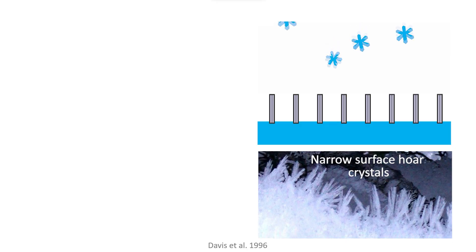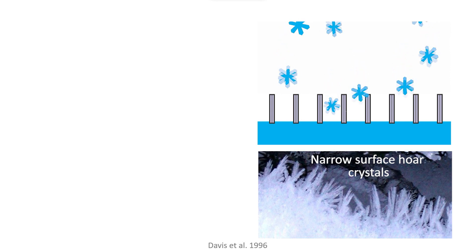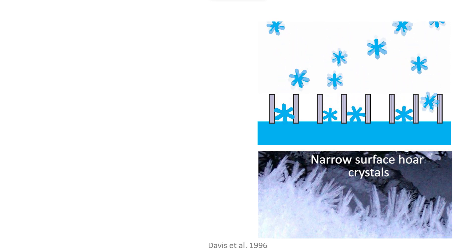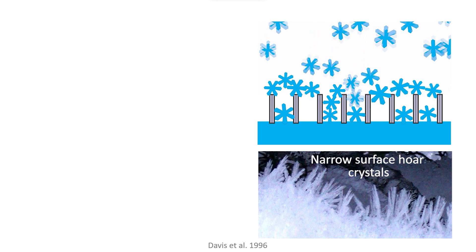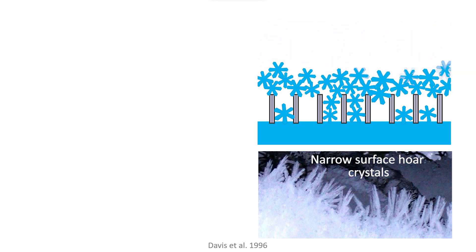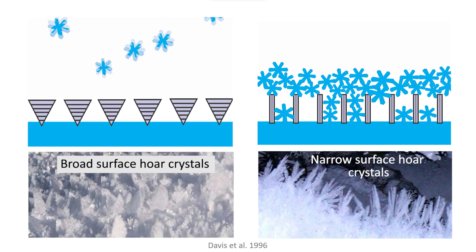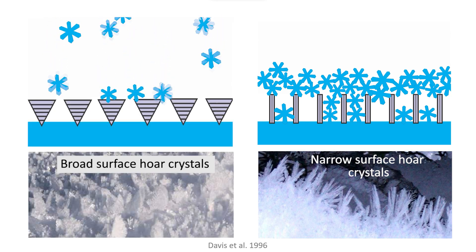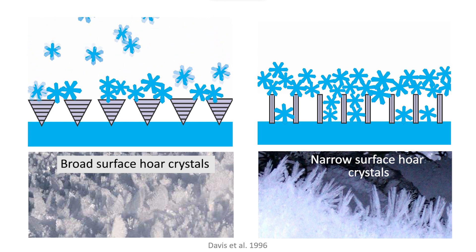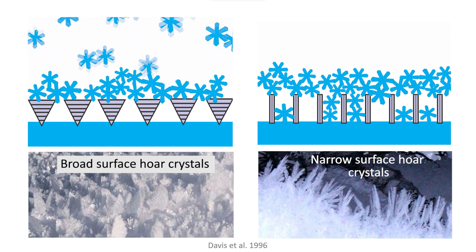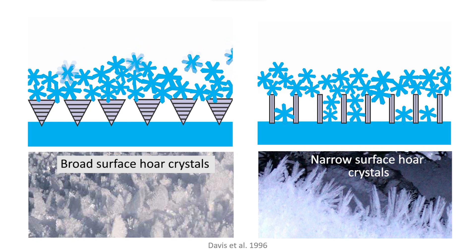Narrow forms, like needles, allow precipitation particles from the next snowfall to get between the surface oar crystals. The precipitation particles will bond to adjacent surface oar crystals and likely add to the strength of the surface oar layer. In contrast, broad forms like wedges are thought to act like umbrellas, reducing the number of precipitation particles that fall between and bond to the surface oar crystals. While the umbrella effect is plausible and mentioned in a few research papers, it has not been verified with field studies.